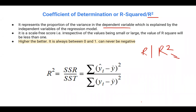Essentially, we can use this for prediction. Now R-squared is given by this equation. We have the numerator: SSR divided by SST. SSR here simply just means the sum of squares due to regression, and this is just the sum of the differences between the predicted value y-hat — this is our predicted value — and the mean of our response or dependent variable.